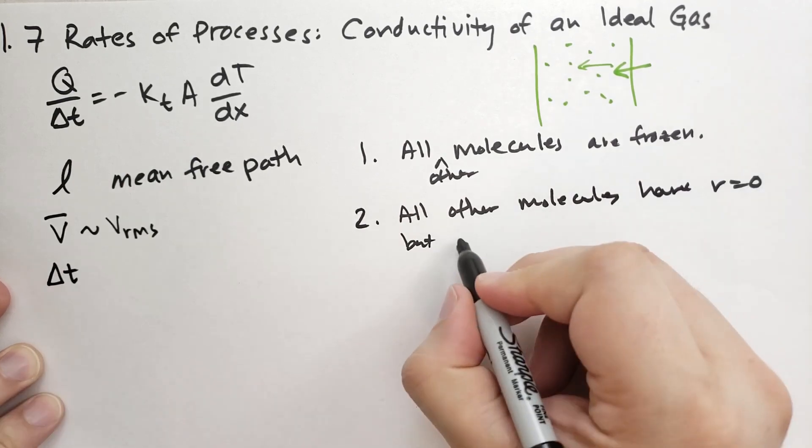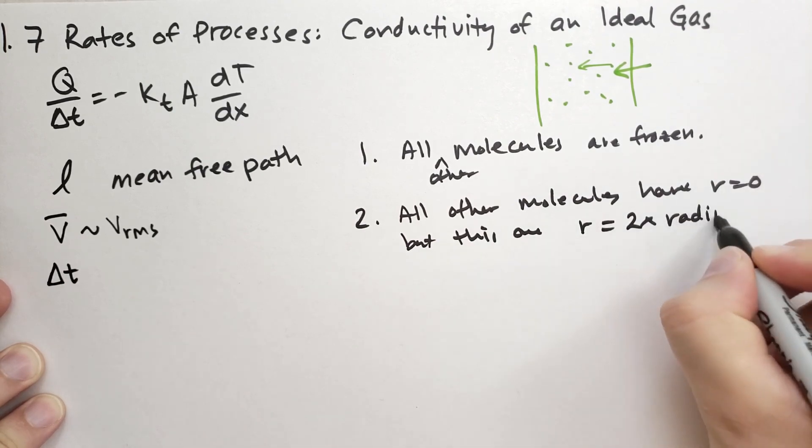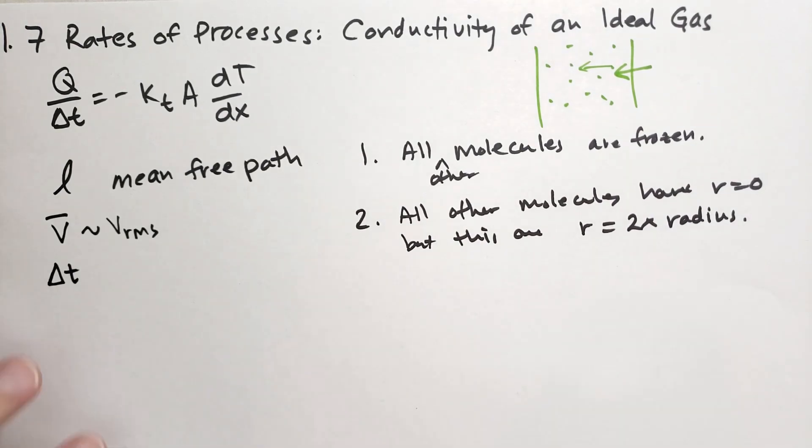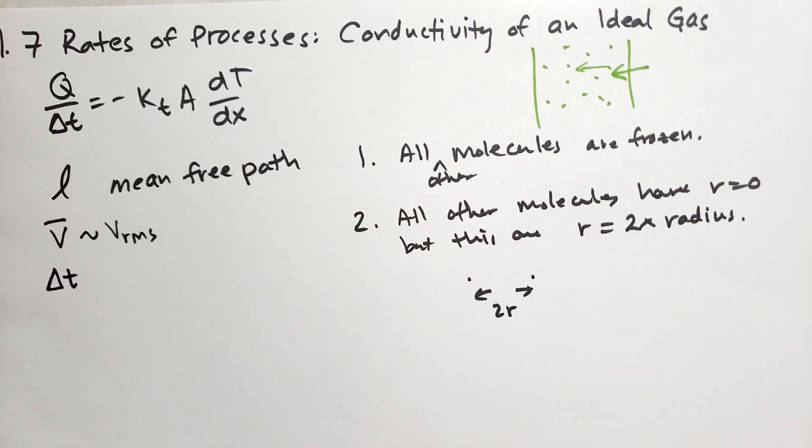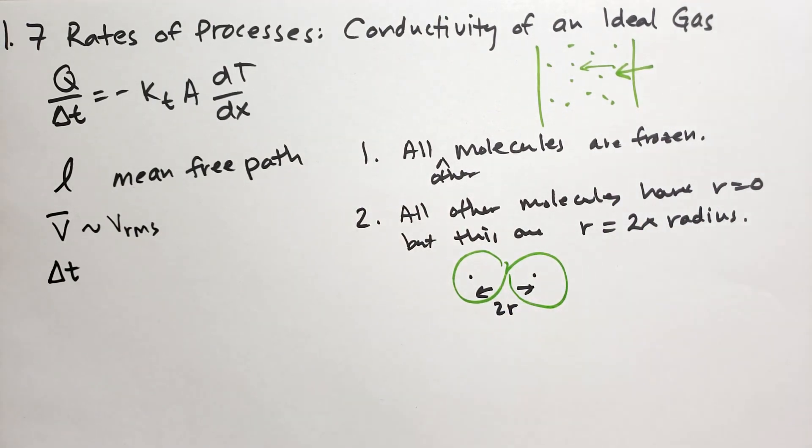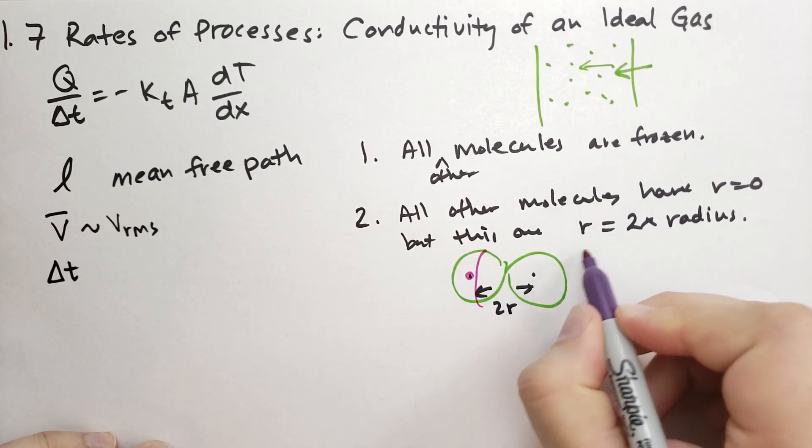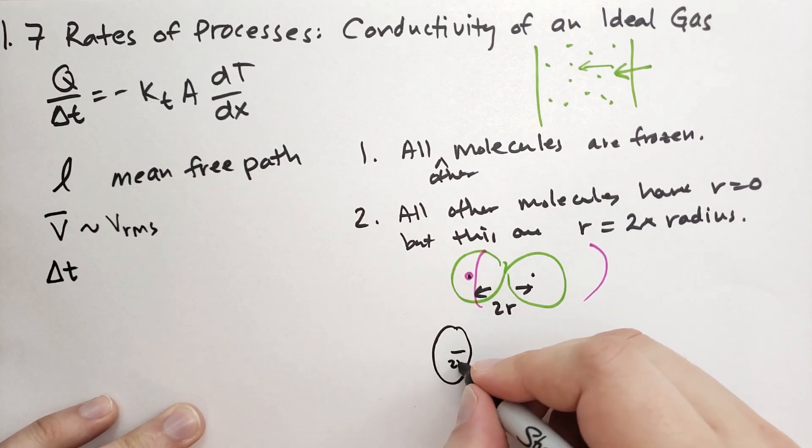The second thing is that we're going to consider that all other molecules have a radius of zero, but this one has a radius that's equal to two times the standard radius of a molecule. Okay. And the reason why we're doing that is because we note that a collision occurs when the centers of the two particles get within two r of each other. So this happens if we consider that both particles have the same radius. So like this, it would also happen if we have one of the particles has no radius and the other particle has twice that radius, right? So in those two cases, either one. And so we'll just consider that it has twice the radius.